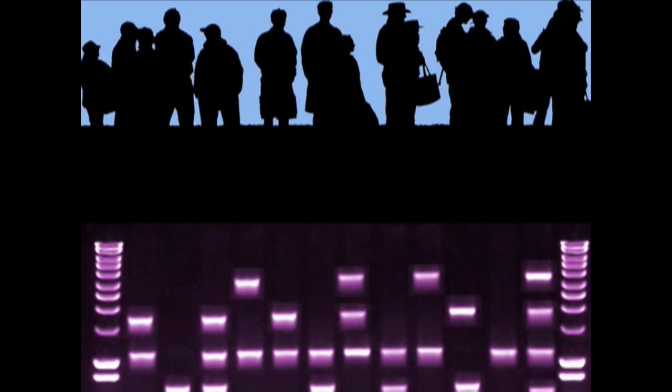One type of VNTR commonly used to compare genetic fingerprints is the D1S80 polymorphic region, found on the first chromosome. By isolating the DNA of several people and amplifying the D1S80 polymorphism, it's possible to compare each participant's unique genetic signature. To begin, cells must be collected from the subjects.